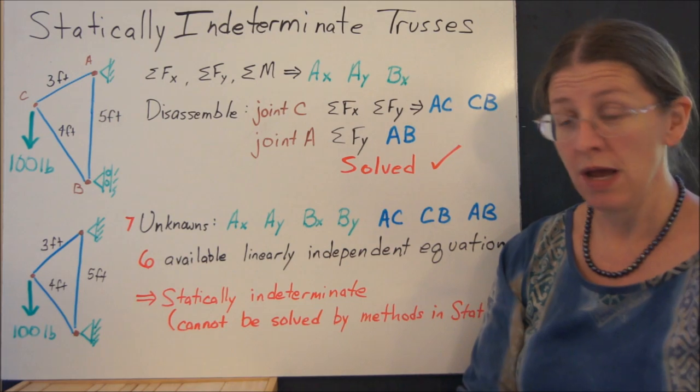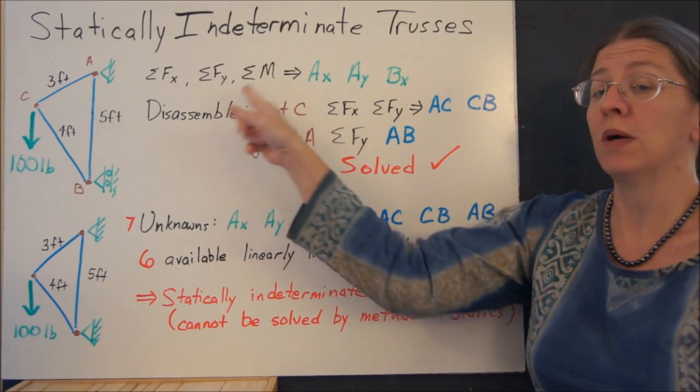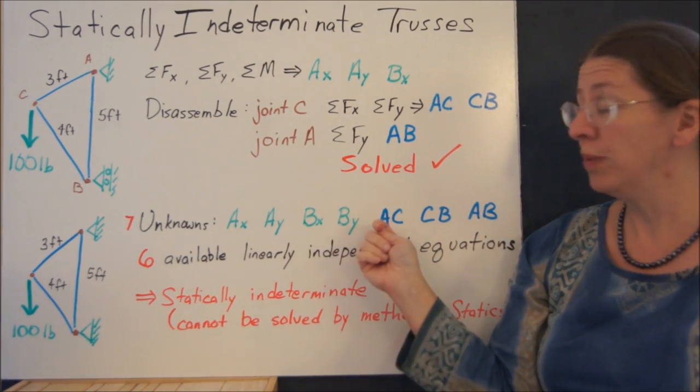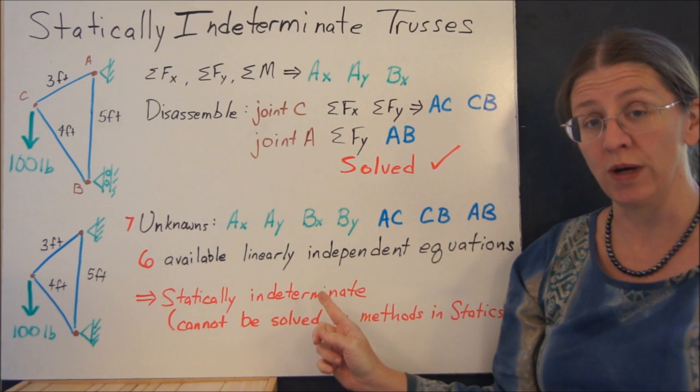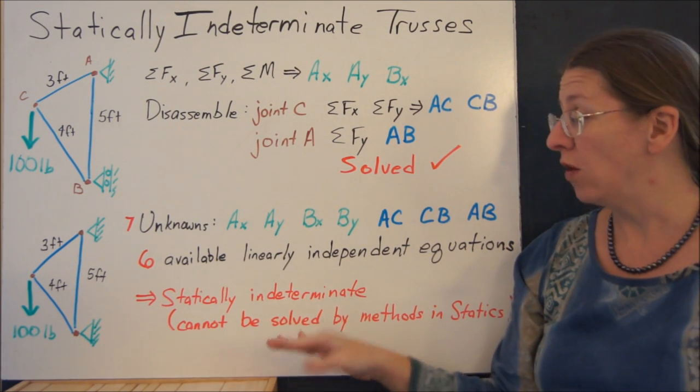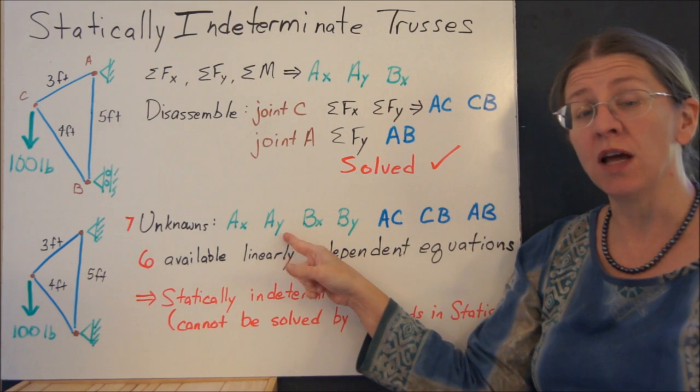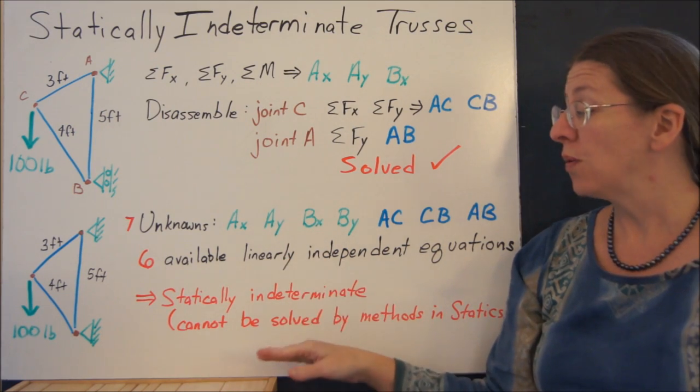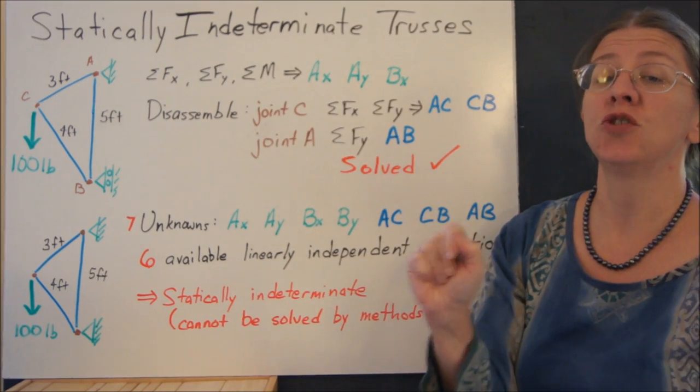And the three external ones that I started with here will be duplicated by the six for each joint. I can't solve to find seven unknowns with only six equations. So that is called a statically indeterminate truss.